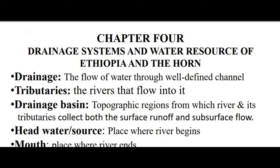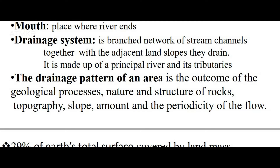Chapter 4: Drainage Systems and Water Resources of Ethiopia and the Horn. Drainage refers to the flow of water through a well-defined channel. Tributaries are the rivers that flow into a principal river. A drainage basin is the topographic region from which a river and its tributaries collect both surface runoff and subsurface flow. The headwater or source is the place where a river begins; the mouth is where it ends. A drainage system is a branched network of stream channels together with the adjacent land slopes they drain.